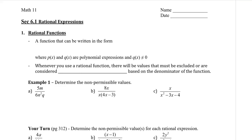A rational function is a function that can be written in the form p of x divided by q of x. It is essentially a fraction where the numerator and the denominator are polynomial expressions, and q of x cannot equal 0.